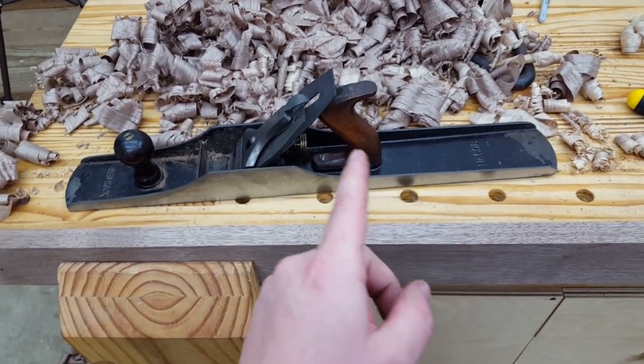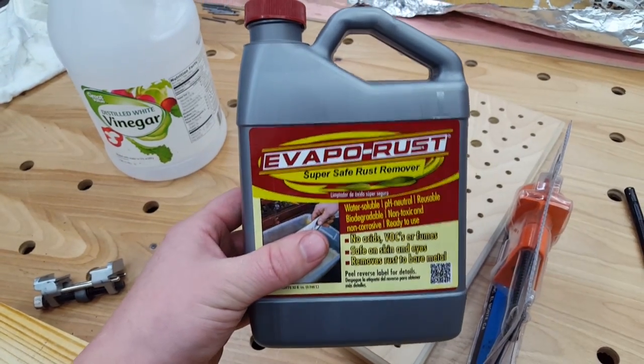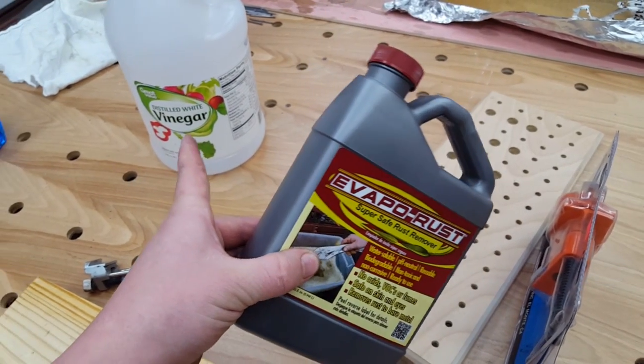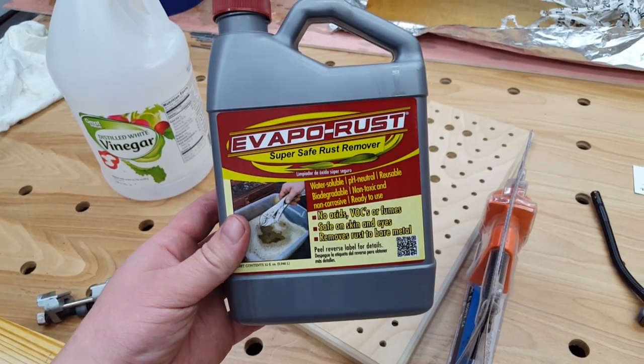Actually real quick before I get into that, I removed the rust with this stuff, Evaporust. When I did my last plane restoration a lot of people said try this stuff instead of vinegar, so I did. And wow, it worked really really well.